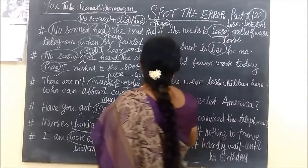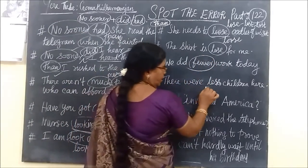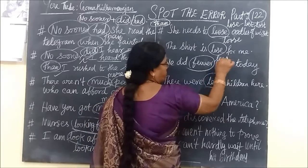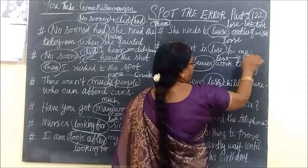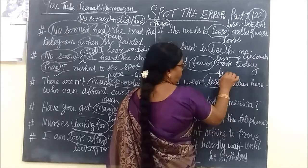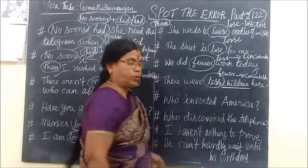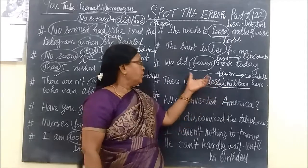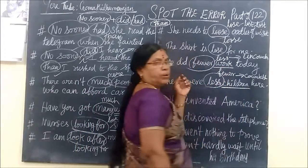Next: 'We did fewer work today.' Also: 'There were less children here.' For uncountable nouns, use 'less.' For countable nouns, use 'fewer.' 'Work' is uncountable, so the correct sentence is 'We did less work today.' 'Children' are countable, so the correct sentence is 'There were fewer children here.' Less is for uncountable; fewer is for countable.